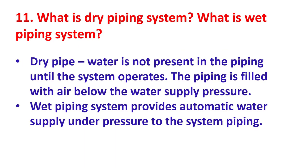What is a dry piping system and what is a wet piping system? In a dry pipe system, water is not present in the piping until the system operates; the piping is filled with air below the water supply pressure. A wet piping system provides automatic water supply under pressure to the system piping at all times.